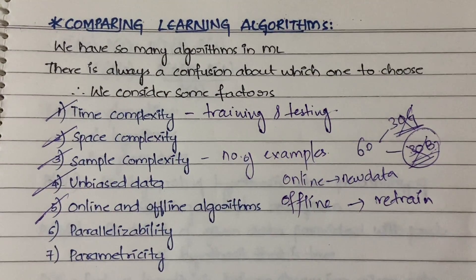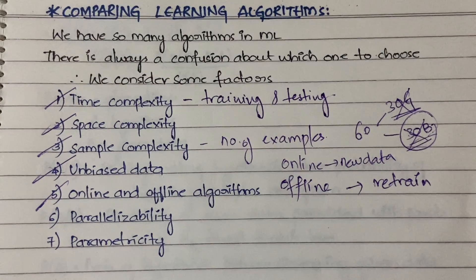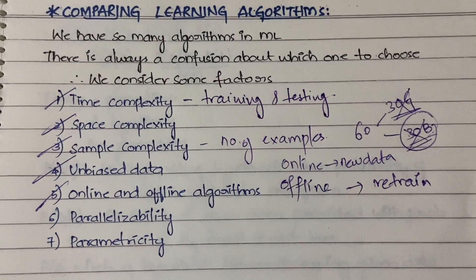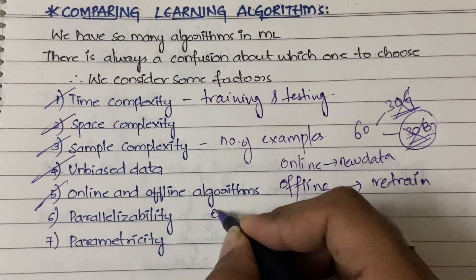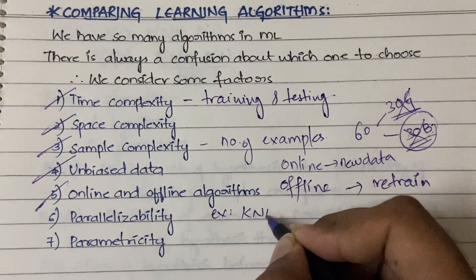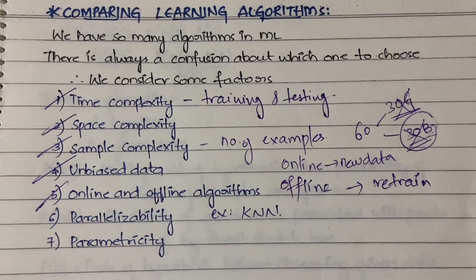Next is parallelizability. Parallel algorithms can complete multiple operations at one time instead of doing everything step by step. They share and distribute the workload. An example of this is the KNN algorithm — KNN is the K-Nearest Neighbor algorithm — which we will be discussing in the next coming videos.